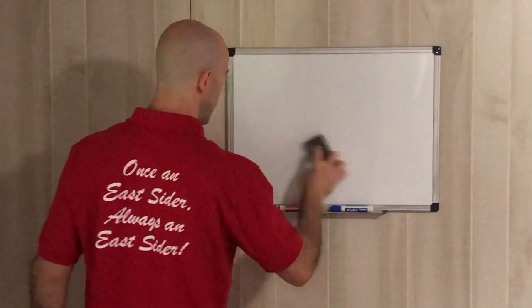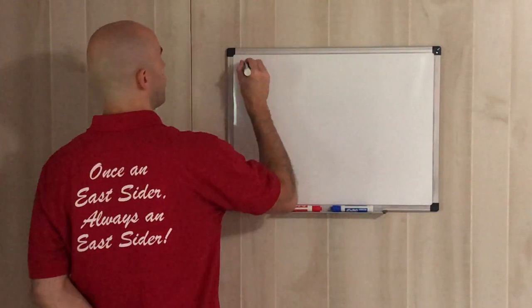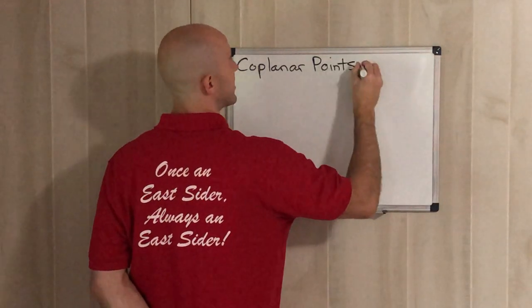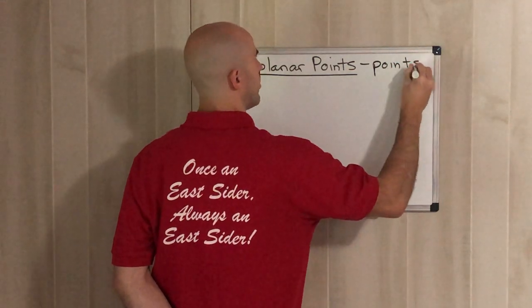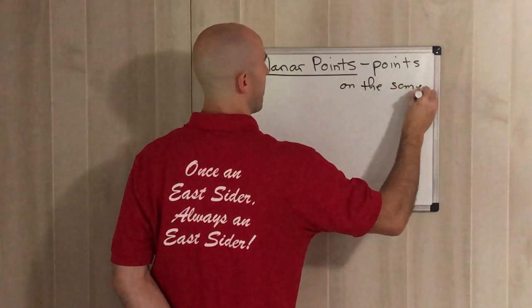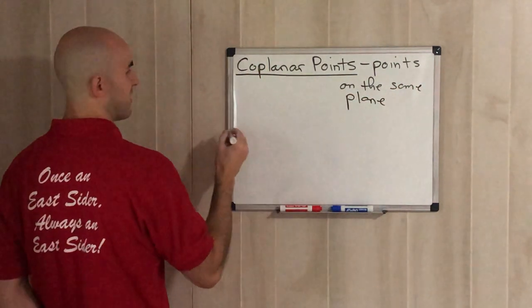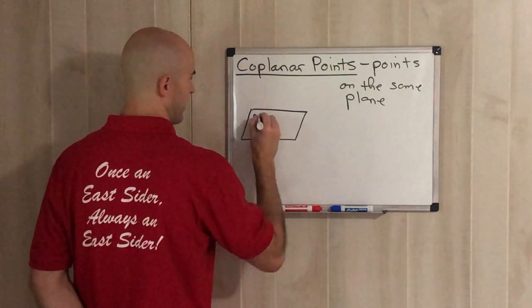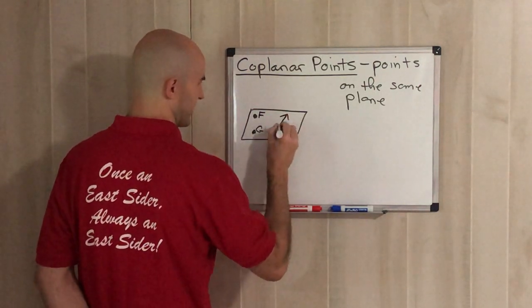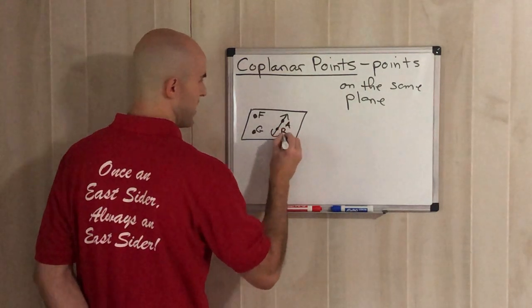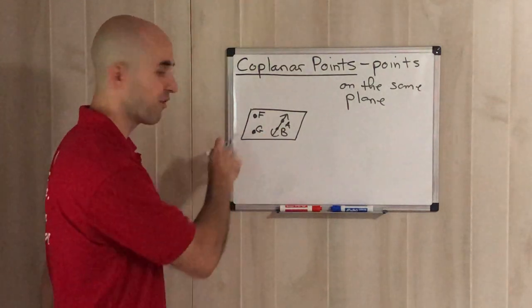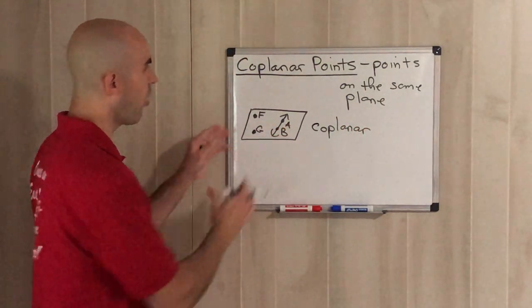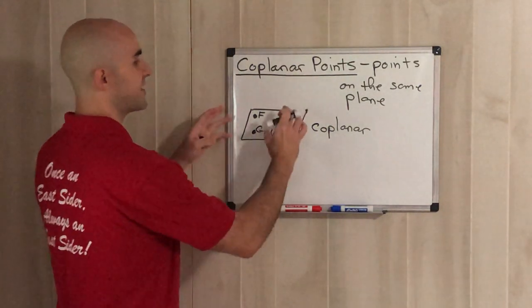The last term is coplanar points. You can probably hear the word 'plane' in coplanar. Coplanar points are points that are on the same plane. So if we have a plane with points F, G, A, and B all inside it, all four of those points are coplanar — because they're all inside the same plane.